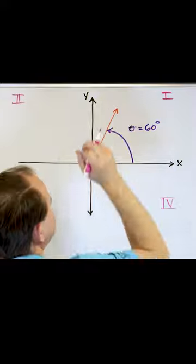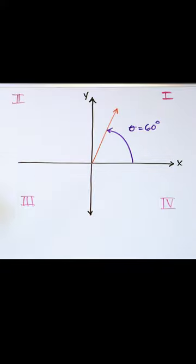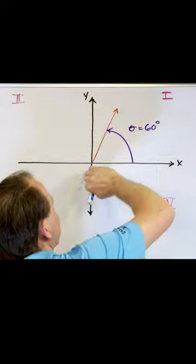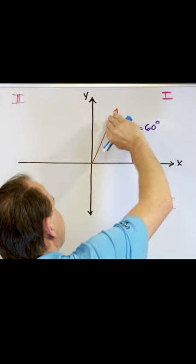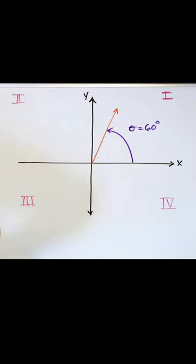So if I asked you what quadrant is this angle in, then it would be a simple answer. You would say the terminal line here, this is the initial and this is the terminal, the terminal part of the angle is in quadrant one.